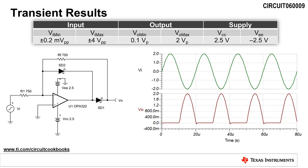A transient analysis of this circuit with a 50 kilohertz 4 volt peak-to-peak sinusoidal input yields a half-wave rectified output signal with an amplitude of 2 volts peak.